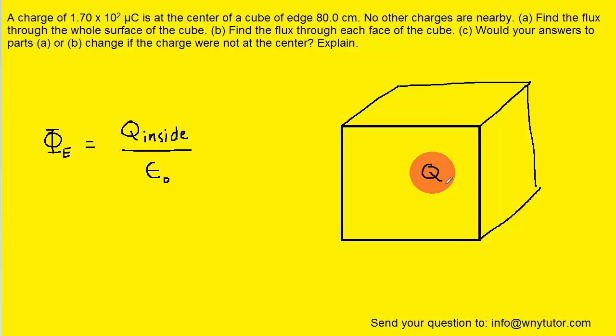We've labeled the charge with a capital Q and then the surface would be this cube that is enclosing the charge. The total charge inside that cubic surface is simply capital Q, the amount of charge that was stated in the problem.